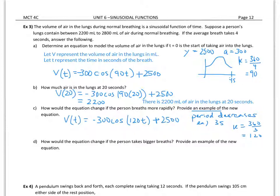Alright, how would the equation change if a person takes bigger breaths? So this is meaning we are increasing the amount of volume of air that's coming in. When you're running, you're usually breathing more deeply to bring more oxygen in to provide oxygen to our cells in our body. So provide an example of the new equation. Taking bigger breaths, we're going to assume that the max volume increases.